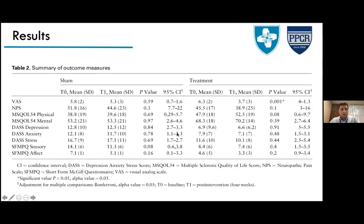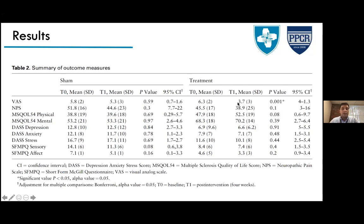The outcome measurement summary table shows the sham group and the active tDCS group side by side across all measured outcomes. The only statistically significant outcome was the Visual Analog Scale — the active group's mean pain scores after treatment were lower than the sham group's. All other outcomes were not statistically significant.